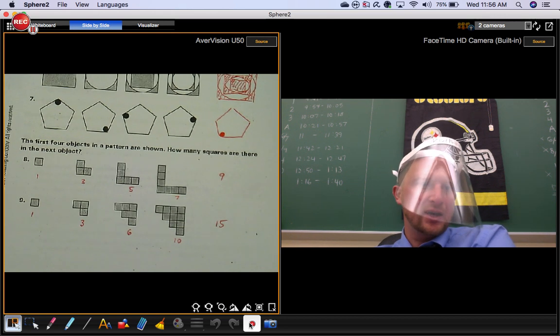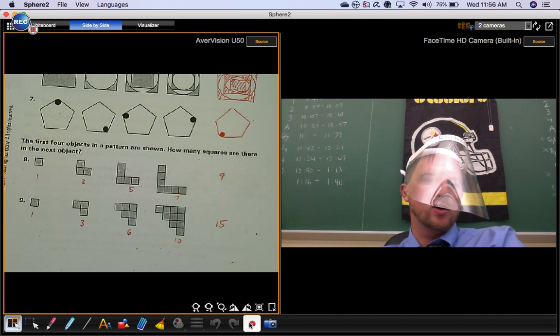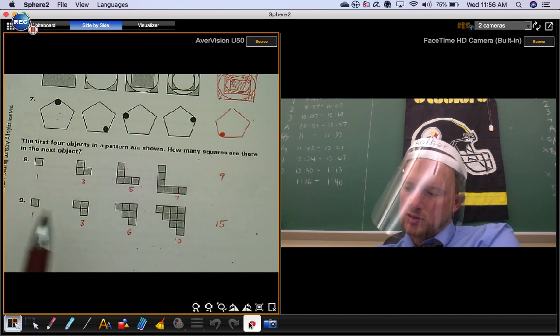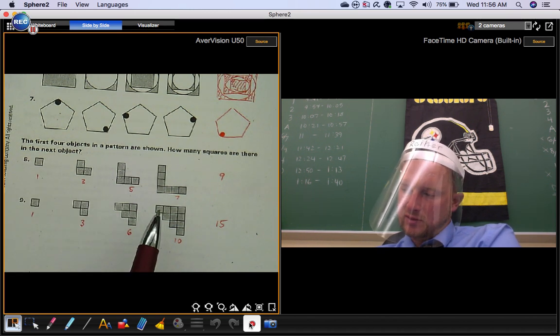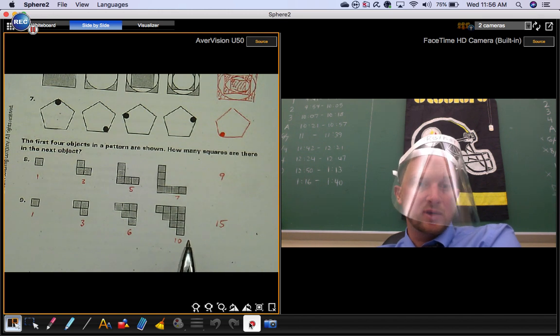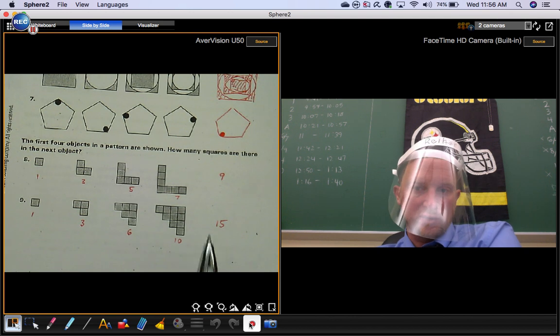Numbers eight and nine, the first four objects in a pattern are shown. How many squares are there in the next object? So just count your squares. One, three, five, seven, nine. That's how many should be in the next shape. You don't actually have to draw it. You can find the pattern without drawing it.